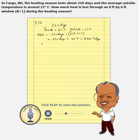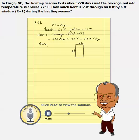Now, do we know the area? The area is given, actually. The dimensions of the window are 8 feet by 6 feet. Therefore, the area is 8 feet times 6 feet, which is 48 square feet.